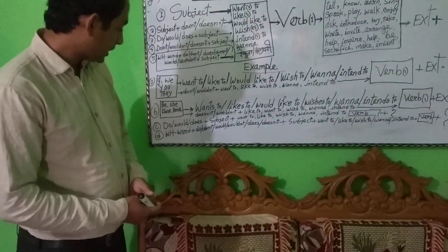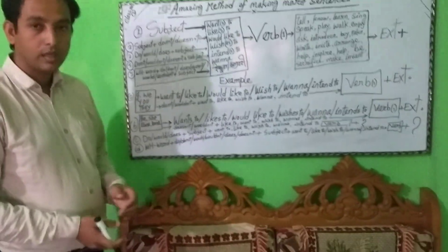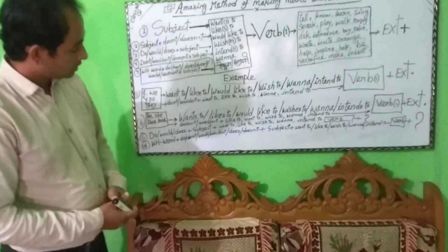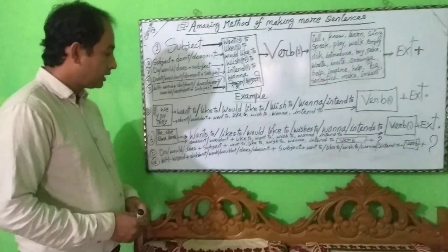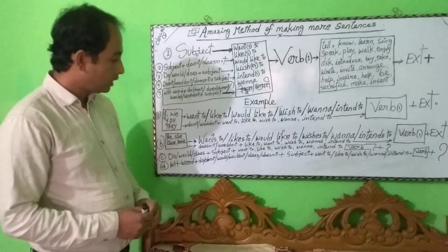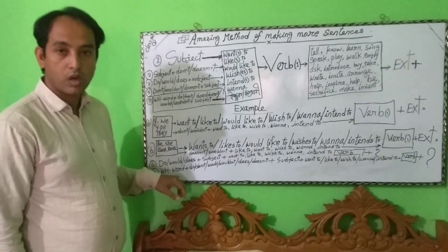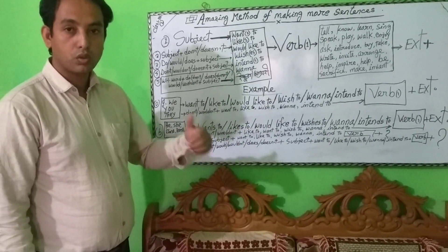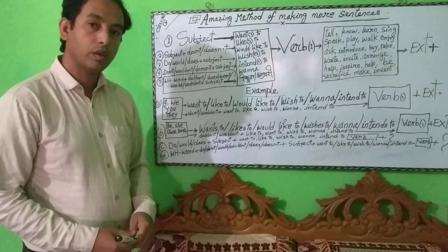Then for negative, use 'don't' or 'doesn't' in the same way. I think you have understood what I have said. For your further clarity so that you can understand this topic, I have tried my best to explain this rule. This is a part of the rule. At the very beginning of a sentence, if you want to use what, when, which, where, how — then do, does, don't, doesn't, would — then you can use subject and verb in this way. You will be able to make more sentences.